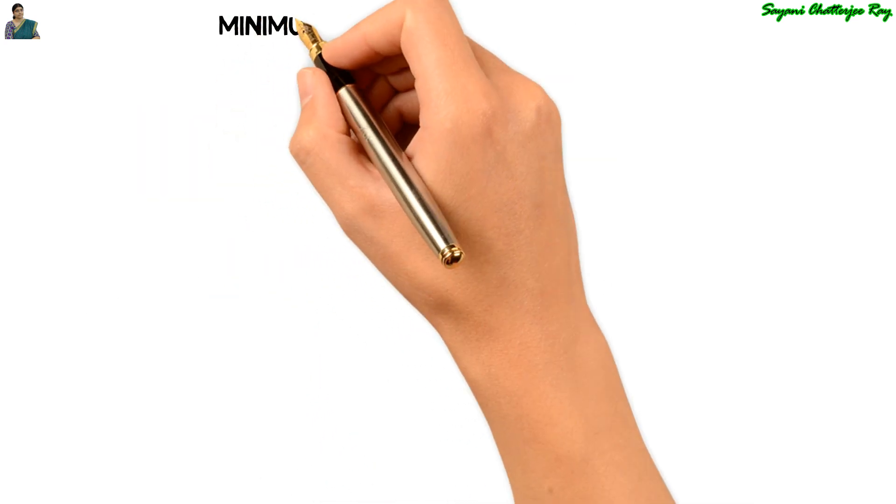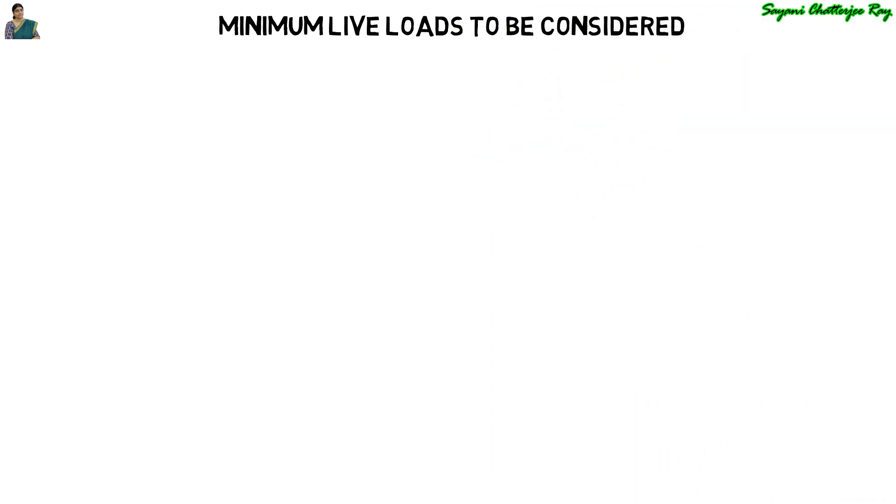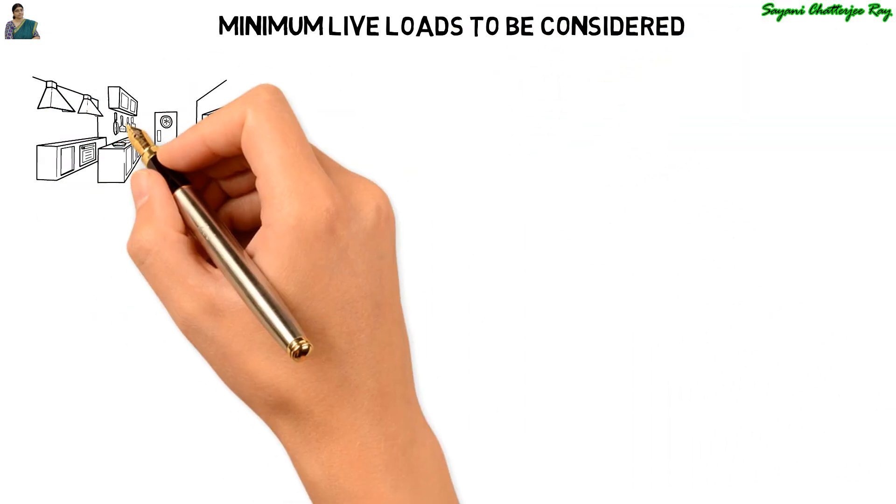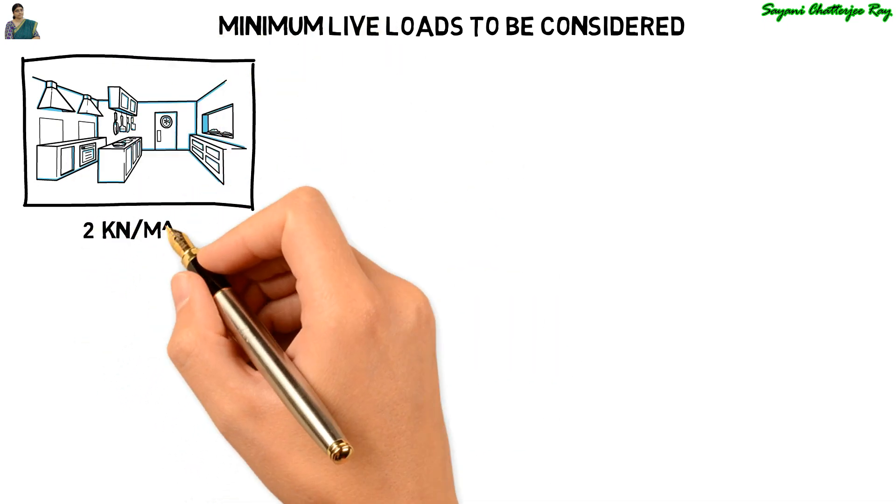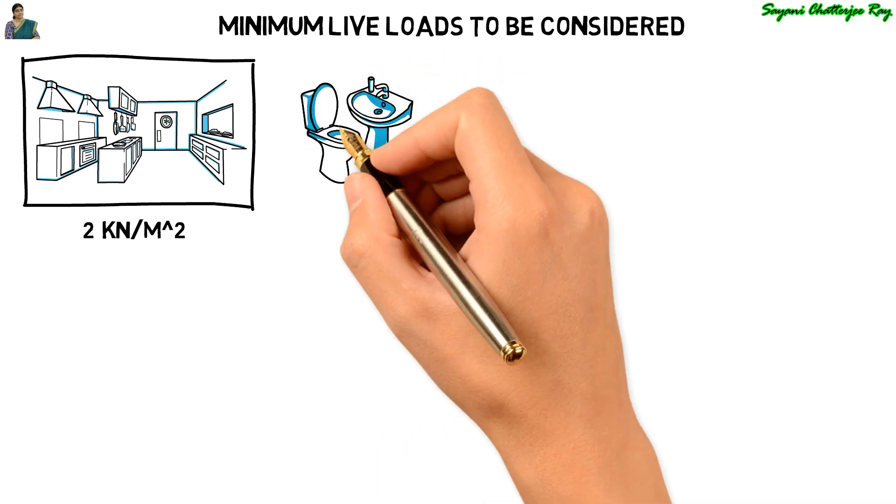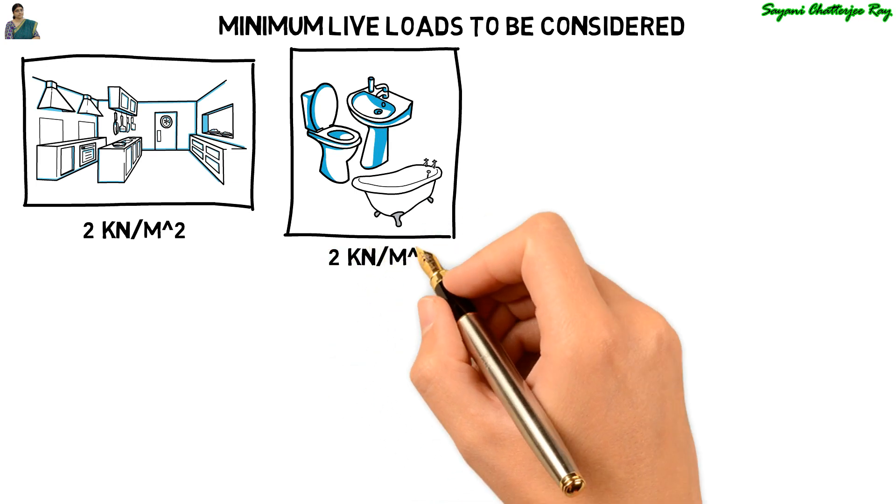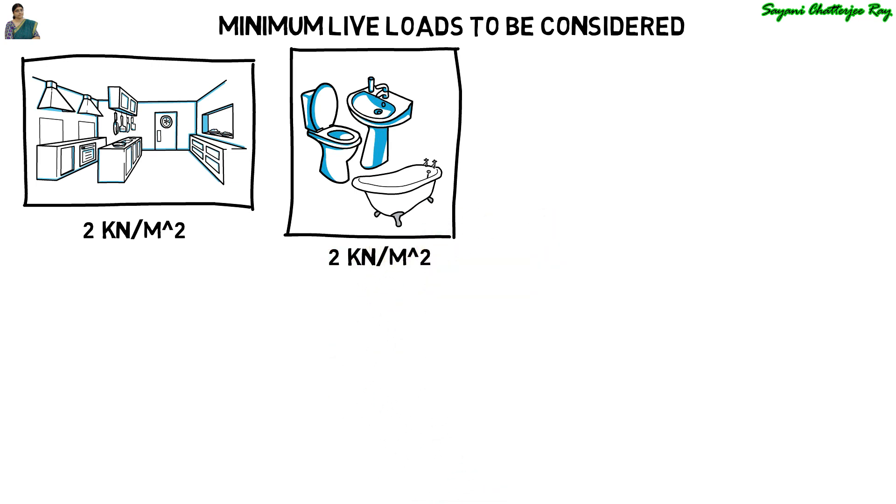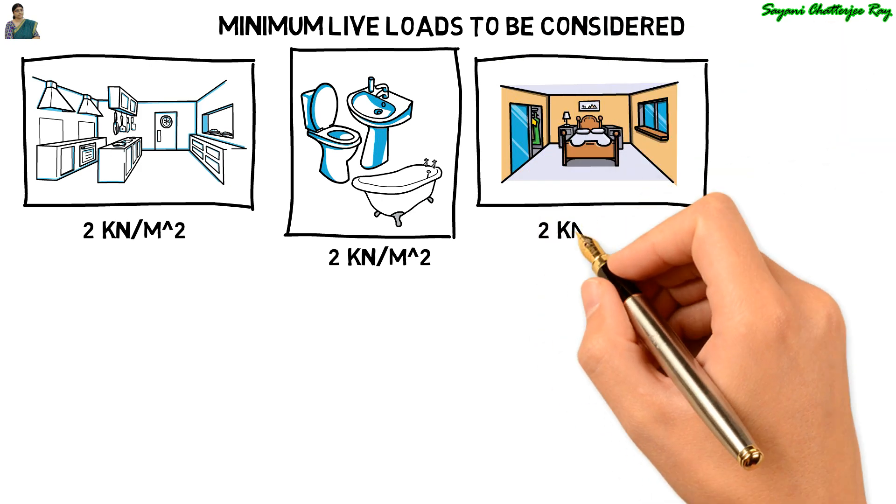Now I will tell you the minimum live load which you have to consider after referring IS 875 part 2. For a kitchen in a dwelling house, UDL load will be 2 kN per meter square. For bathrooms and toilets in any type of building, the UDL load will be considered as 2 kN per meter square. For living rooms and bedrooms in a residential building, UDL load will be 2 kN per meter square.